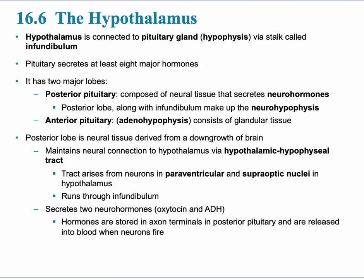The hypothalamus is connected to the pituitary gland, which is also called the hypophysis, and it's connected to the hypothalamus via a stalk called the infundibulum. The hypothalamus is a neuroendocrine gland.